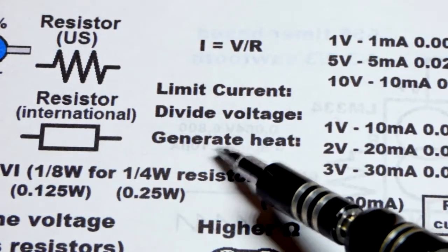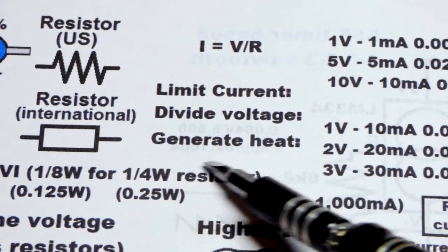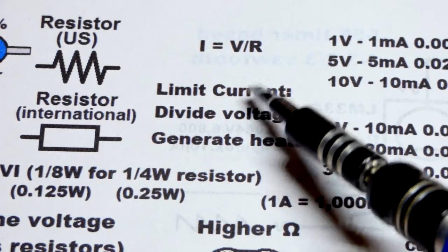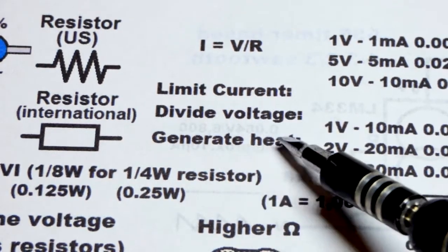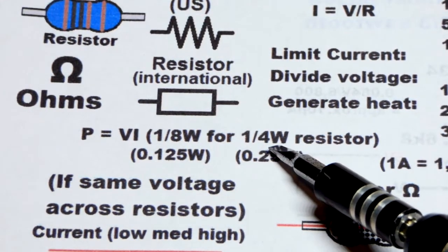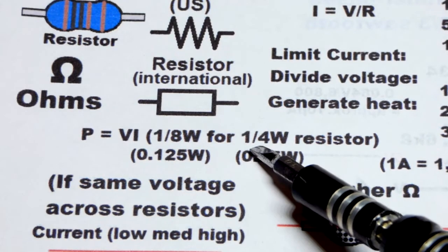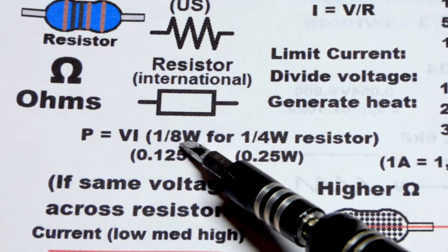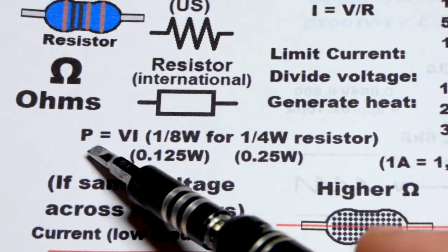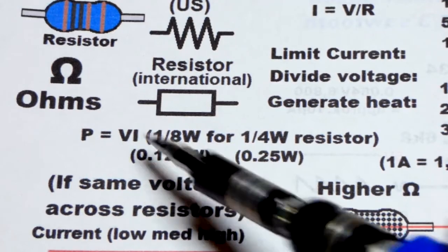Those are advanced topics for other videos, but just be aware. Limits current, divide voltages, and in the process it creates heat. So that's the other thing we're going to focus on in this video. Limiting current and how much heat is generated, because most of them are rated for a quarter watt. If you just get resistors in a kit or something, you're pretty much guaranteed they're a quarter watt resistors, but you still want to keep them under an eighth of a watt so that they don't overheat and last longer. So power, wattage, is voltage times current right there.